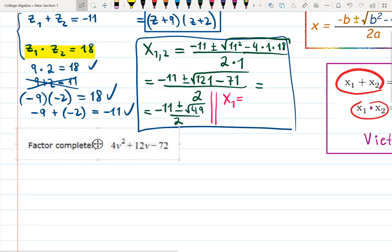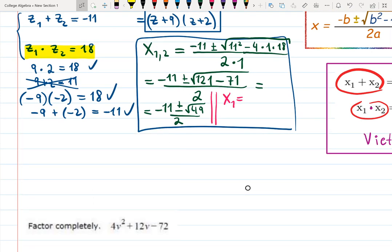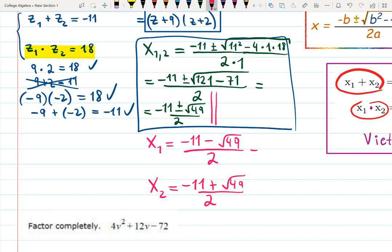And a new note will be x1 is. Let me actually just keep going below, not to crumble everything in one place. So, I will have x1 is minus 11 minus square root of 49, all over 2. And then x2 is minus 11 plus square root of 49, all over 2, equals minus 11 minus 7 over 2. That's minus 18 over 2. That's minus 9.